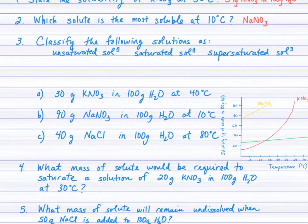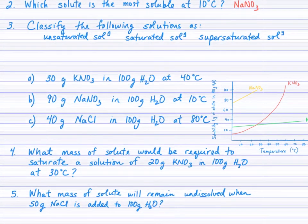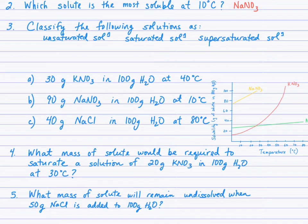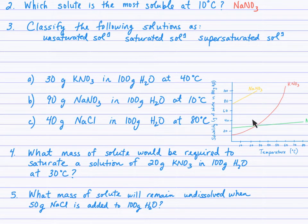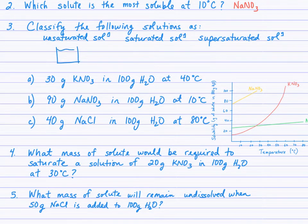I've copied and shrunk the solubility curve so you can refer to it easily in your notes. First, we need to understand unsaturated. Unsaturated is when the solution has less than the maximum amount — essentially we're under the curve.